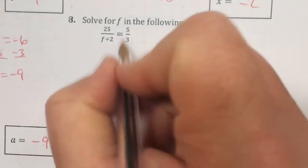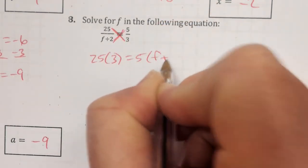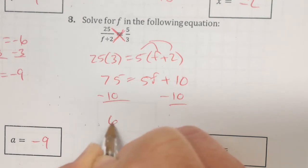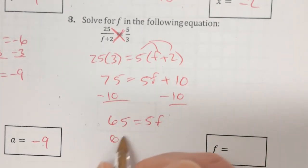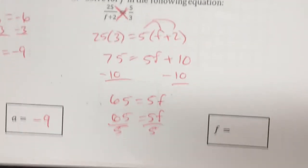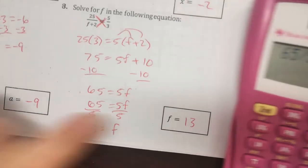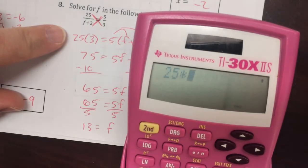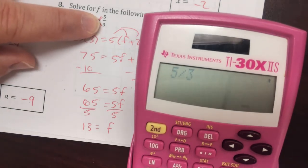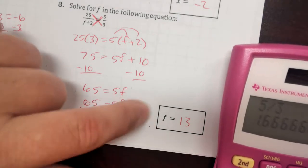Number 8 — same thing. Cross-multiply: 25 times 3 equals 5 times (f plus 2). We get 75 is equal to 5f plus 10. Subtract 10 from both sides — 65 is equal to 5f. Divide both sides by 5, and 65 divided by 5 gives 13, so f equals 13. Checking: 25 divided by (13 plus 2) gives 1.6 repeating, and 5 divided by 3 is also 1.6 repeating. Be careful not to use 1.6 repeating as your final answer — the answer is 13.